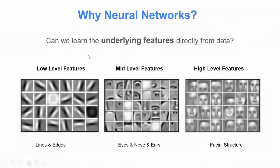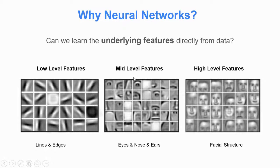What we want to understand is: can we learn underlying features directly from raw data? If we have images of people's faces and want to do face recognition, we can't rely only on high-level features. Our neural network detects low-level features from pixel inputs, then in the next layer constructs mid-level features like eyes, nose, and ears, and then higher layers construct high-level features to recognize the faces.